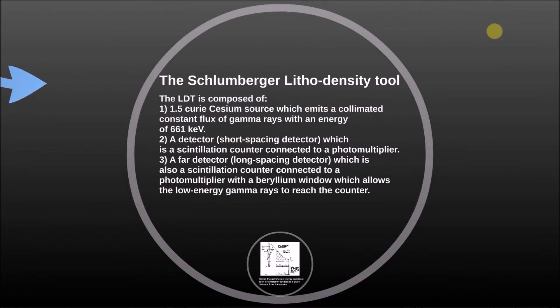The Schlumberger elite density tool is composed of a 1.5-curie cesium source which emits a collimated constant flux of gamma rays with an energy of 661 keV, a detector short spacing detector, which is a scintillation counter connected to a photomultiplier.